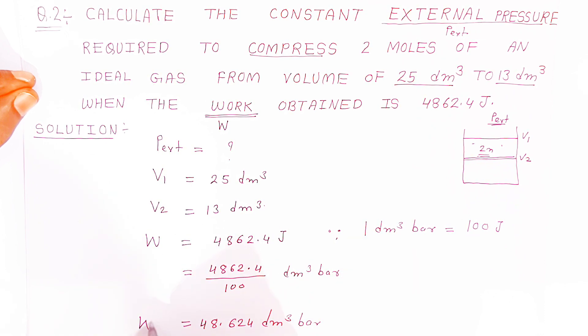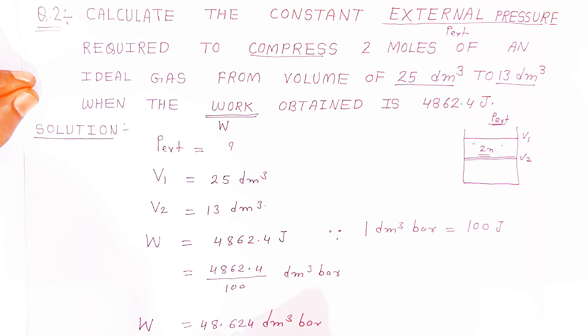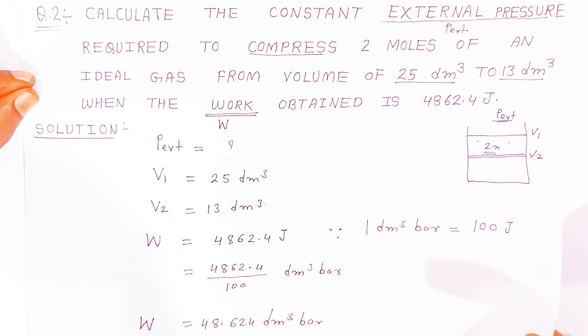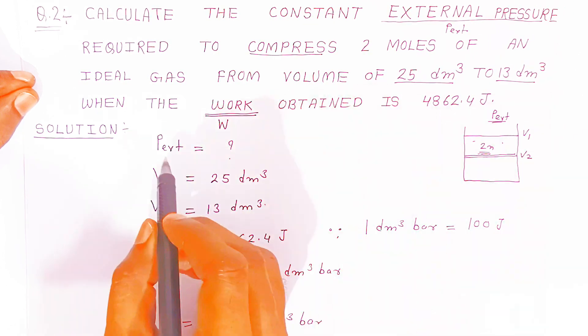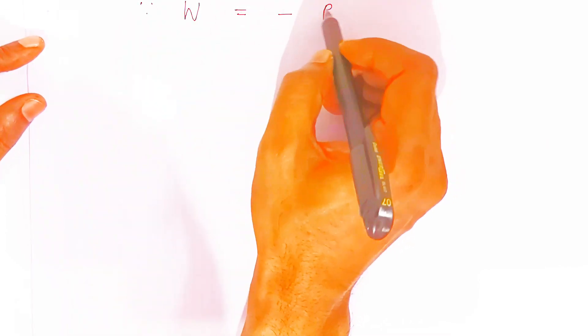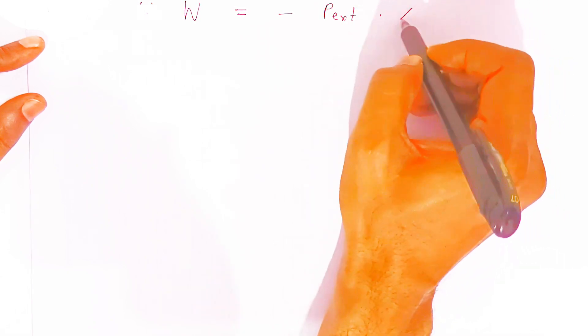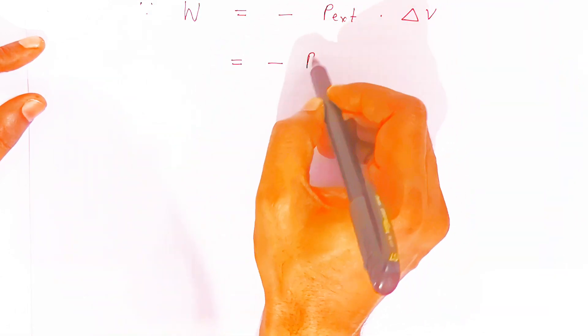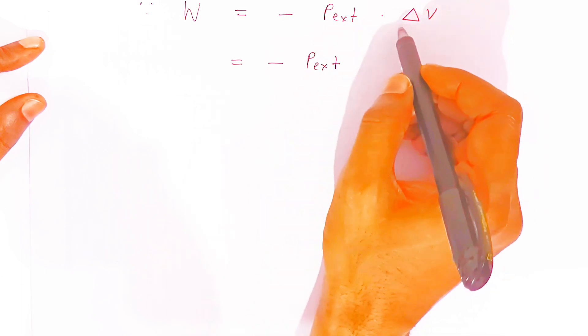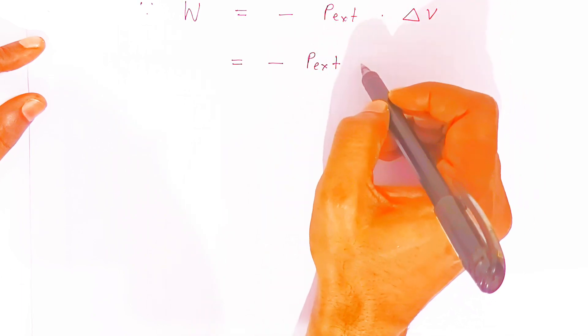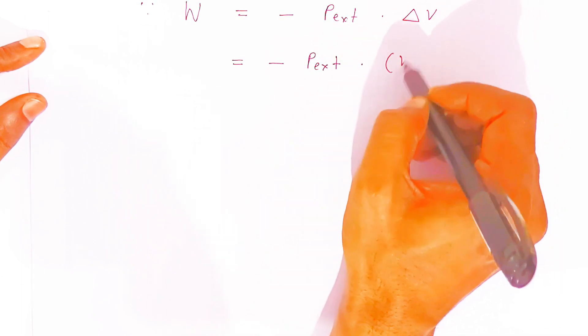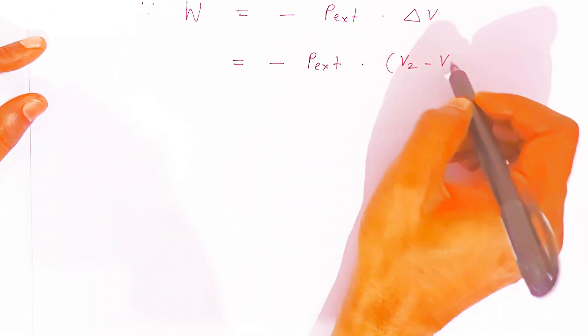Now, with the help of the formula we will calculate P external. The work is nothing but W = −P external × ΔV, where ΔV is V2 minus V1.